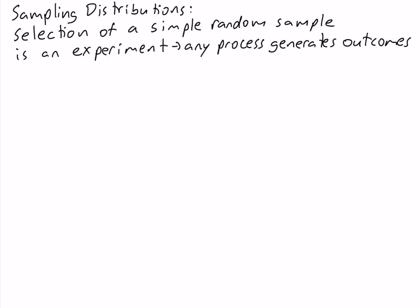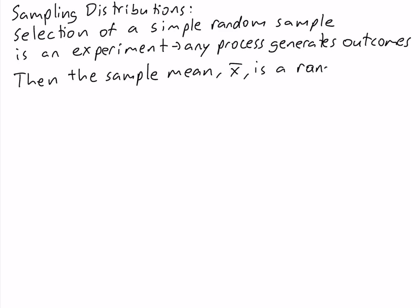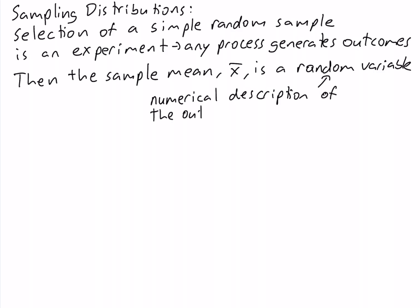Now, if the selection of a simple random sample is an experiment, then the sample statistics that we compute from the sample — such as the sample mean — are going to be random variables. This is because our definition of a random variable is a numerical description of the outcome of an experiment.